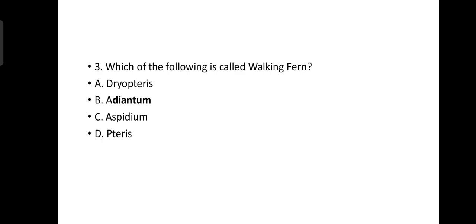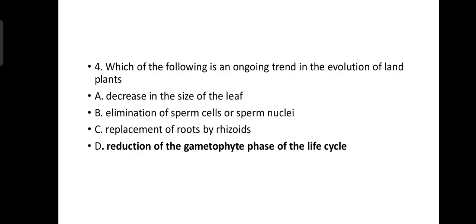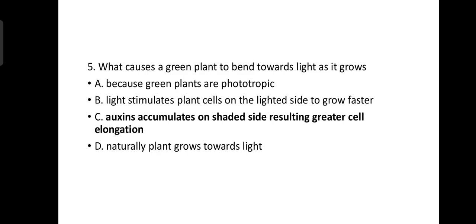Number four: Which of the following is an ongoing trend in the evolution of land plants? Reduction of gametophytic phase of the life cycle. We have seen in angiosperms the gametophytic phase has been reduced. What causes a green plant to bend towards light as it grows? Mostly auxin, that is known as a hormone which accumulates on shaded side and results in greater cell elongation.